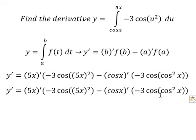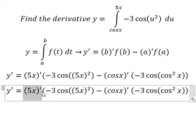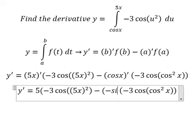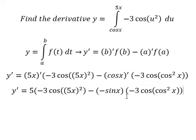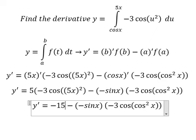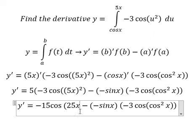So this one we have number 5. This one we have negative sine x. And now we need to simplify negative number 3 with number 5. We have negative 15 cosine 25 x square.